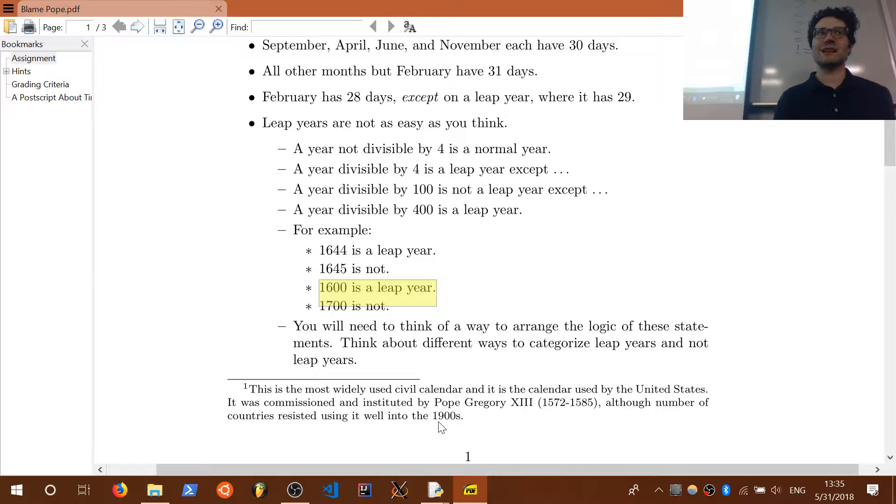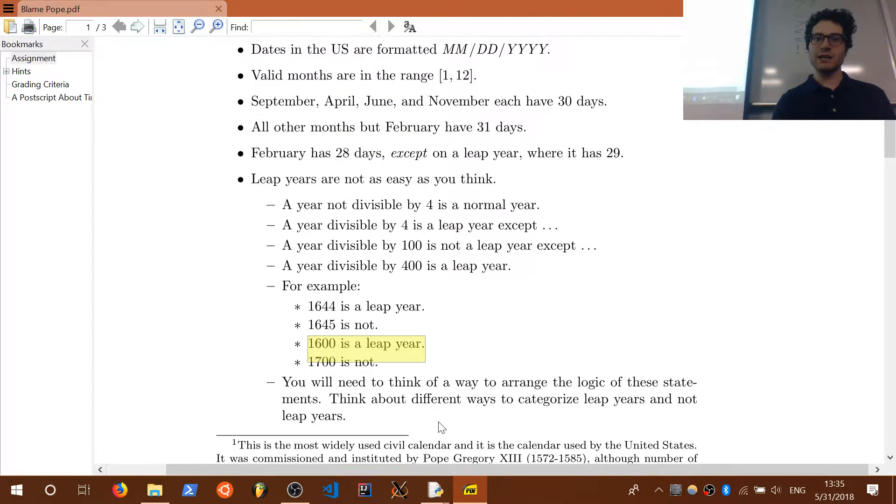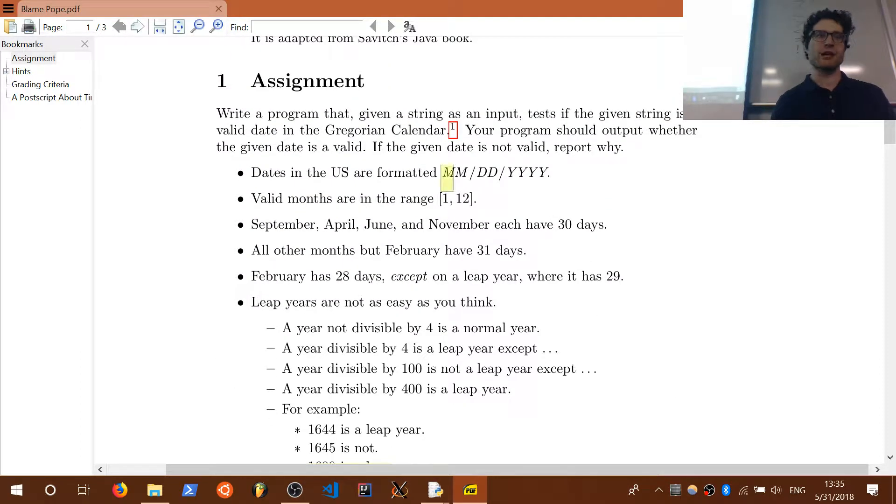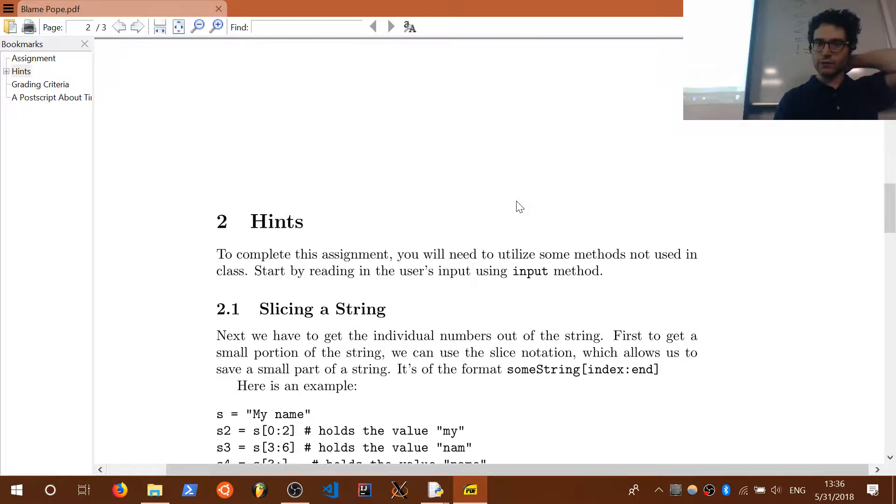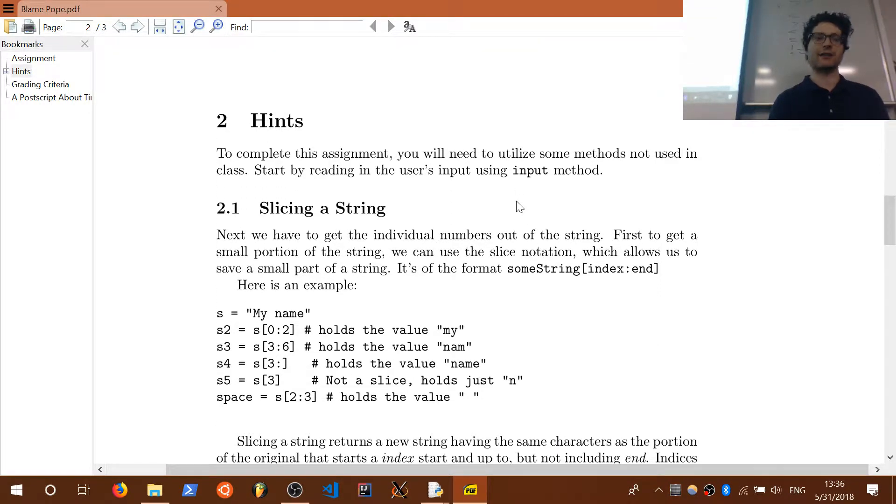So you will have to think of a way to arrange the logic for these statements. Think about the different ways to categorize leap years and not leap years. I like this problem because it does not really care how much programming experience you have - the logic is still tangled, and you just got to untangle it and figure out the best way to do it. I'll give you some hints. But in order to do this, we need to be able to separate little bits of a string. We've got a big string here. I'm having you enter a date in this format: month, month, slash, day, day, slash, year, year, year, year.